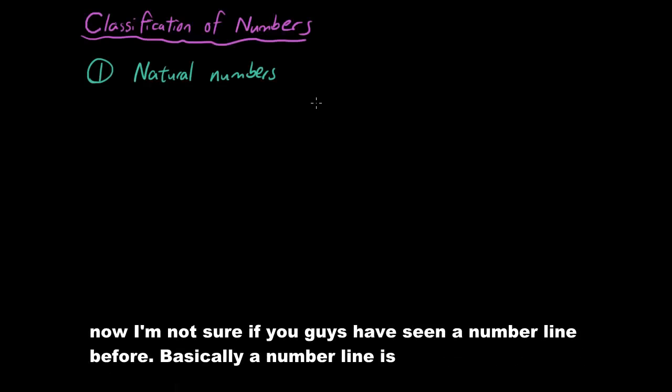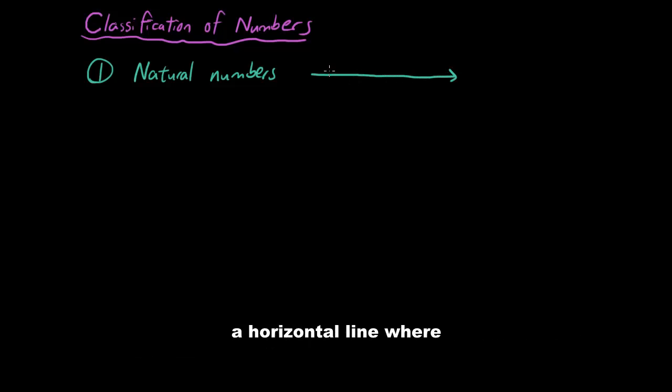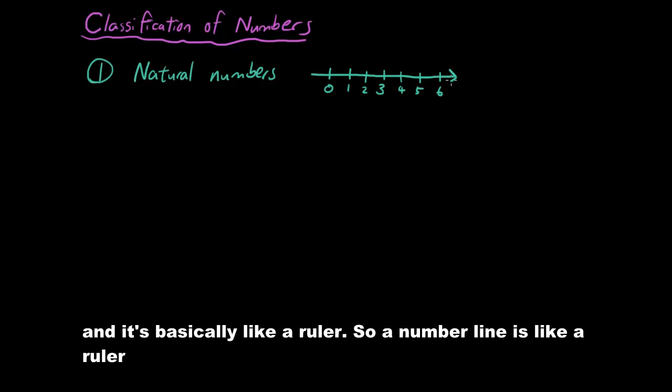Okay, so let's talk about the classification of numbers. The first thing we want to do is define a set for what we call natural numbers. Now I'm not sure if you guys have seen a number line before, but basically a number line is a horizontal line where we indicate where the numbers are going from 0 and increasing by 1 to the right.